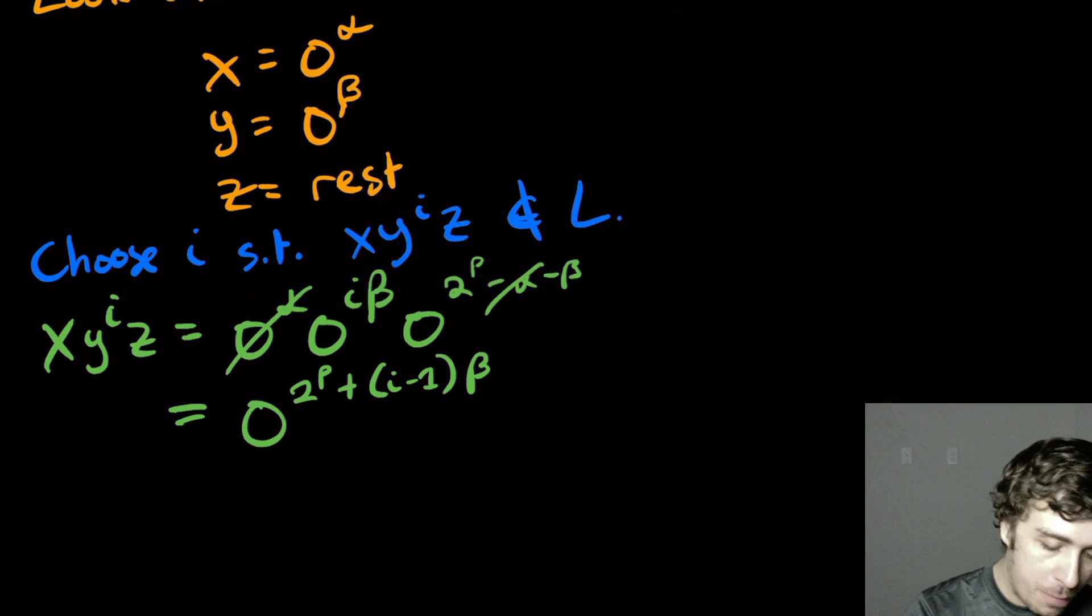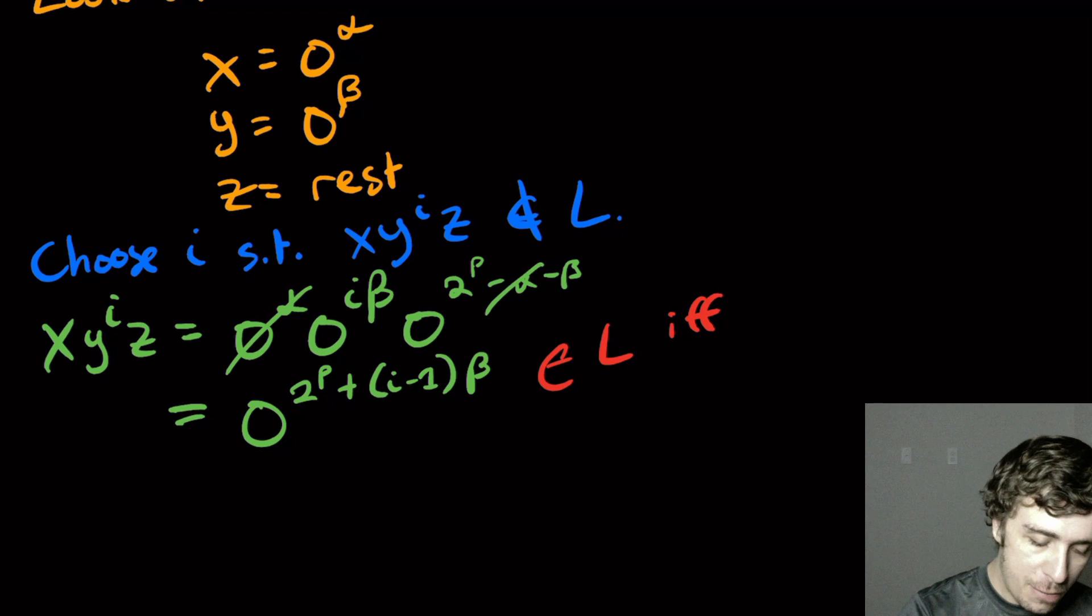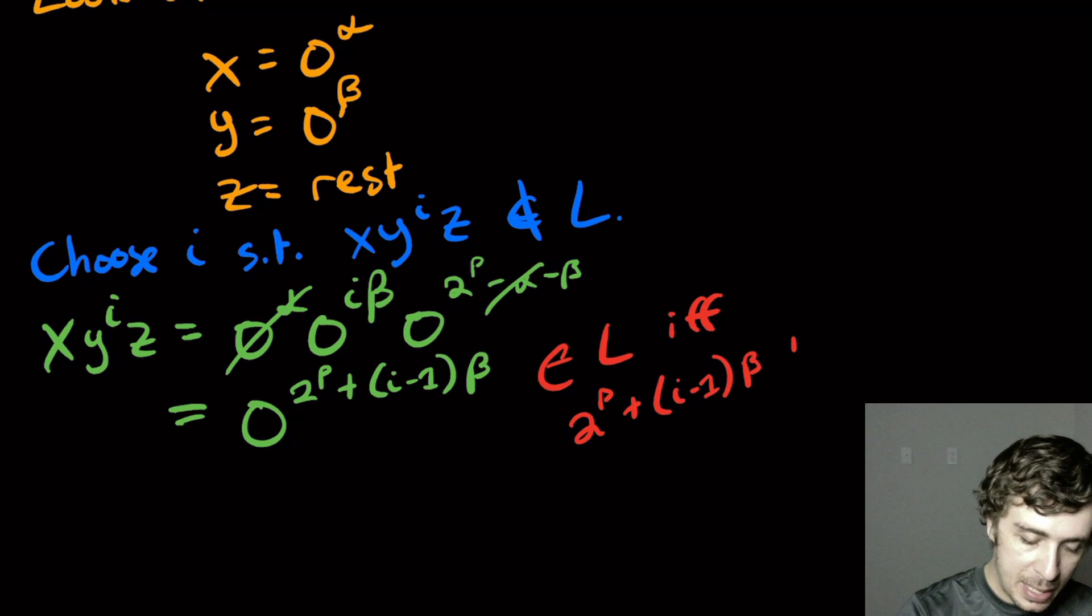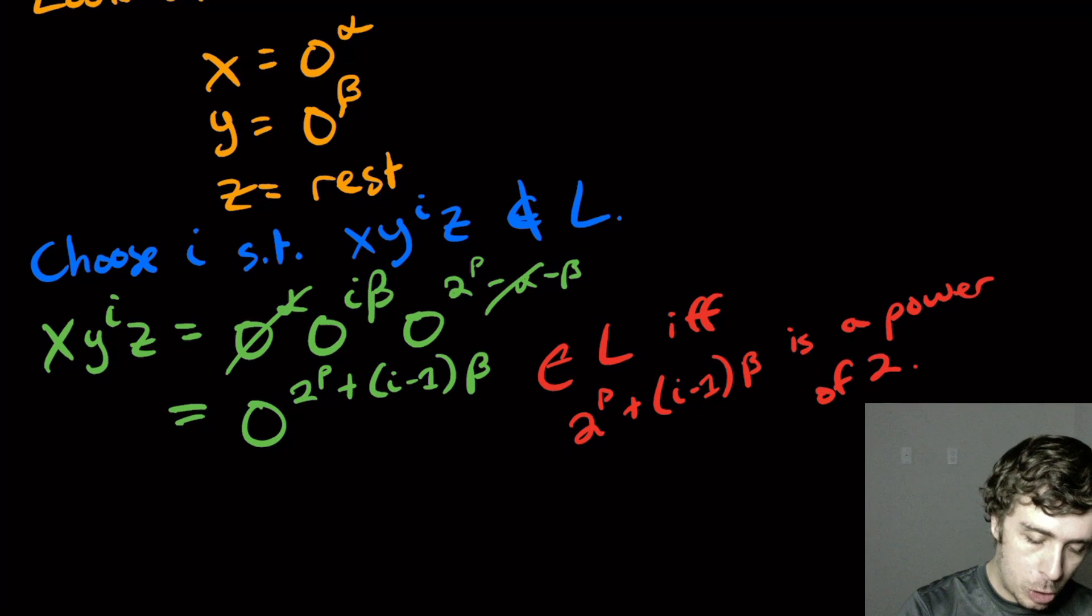So what we can infer from this is that this thing is in L if and only if that exponent is a perfect square. So 2P plus I minus one times beta is not a perfect square. It's a power of two. I should say power of two.